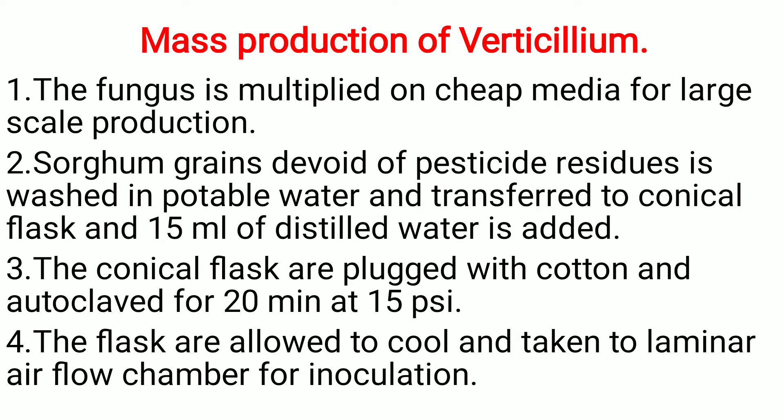Sorghum grains, which are free of pesticide residue, are washed in potable water. The sorghum grains are washed and transferred into a conical flask, and 15 ml of distilled water is added. The conical flask is then plugged with cotton and autoclaved for 15 to 20 minutes at 15 psi pressure, so that the sorghum grains get sterilized.